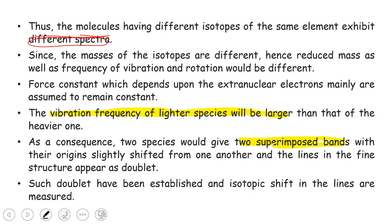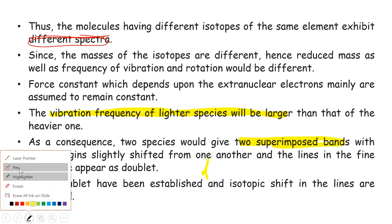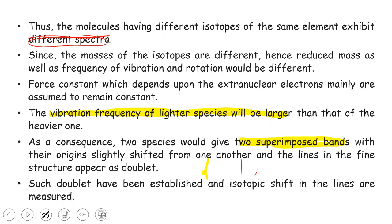The frequency will not vary very much between isotopes, so we get two closely spaced peaks — a doublet — instead of a single line as we might expect in NMR. Such doublets have been established experimentally, and the separation between them is called the isotopic shift.